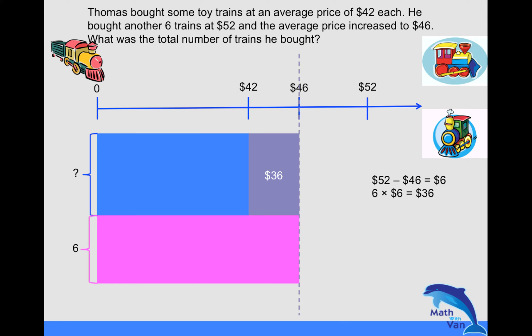And isn't it obvious again on this number line? You can see that 46 take away 42 is the difference of four dollars, right? And do you know how many toy trains there were at first? Yes, because 36 dollars would be distributed to the toy trains, and one toy train needs four dollars more so that they could pull up to 46 dollars, right? So I have the 36 dollars to go around, so 36 divided by four will give me nine.